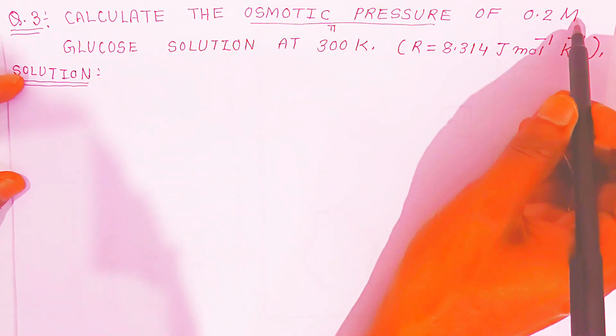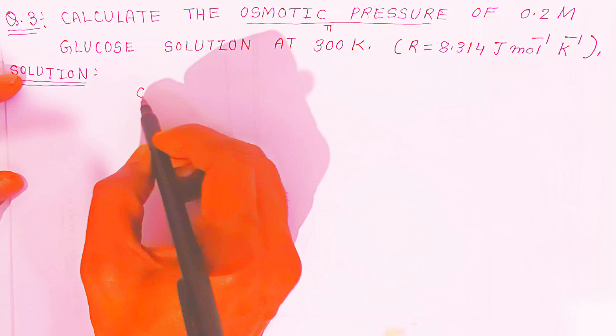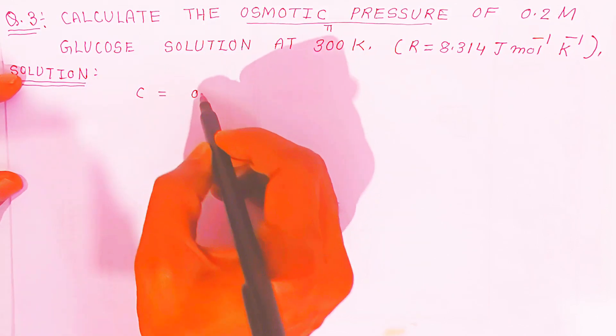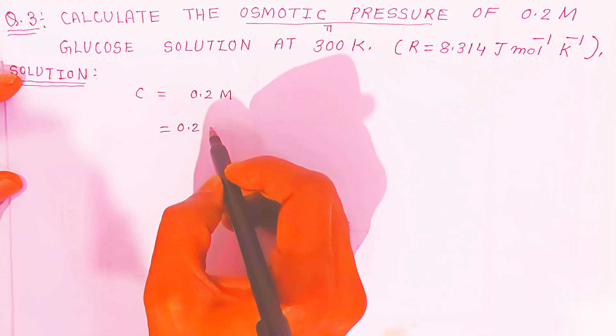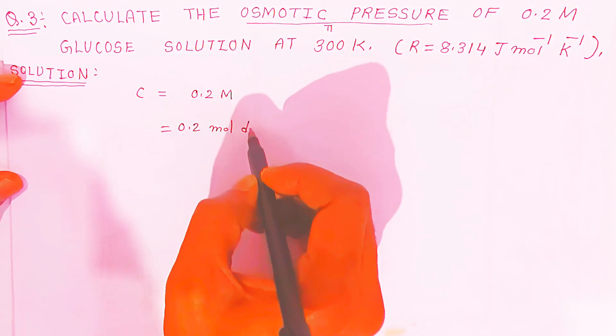For 0.2 molar glucose solution, the concentration of solution is 0.2 molar, that means 0.2 mol per dm³ is given.